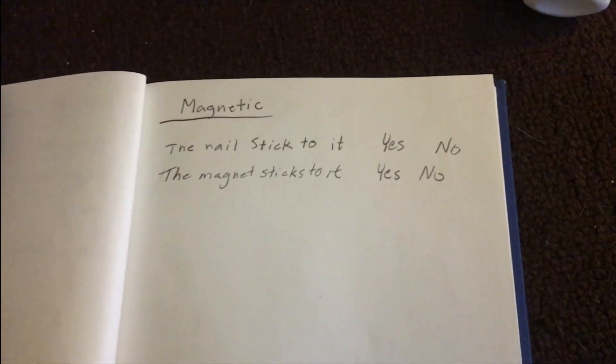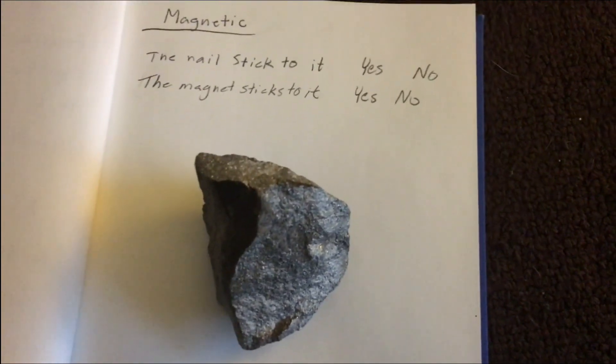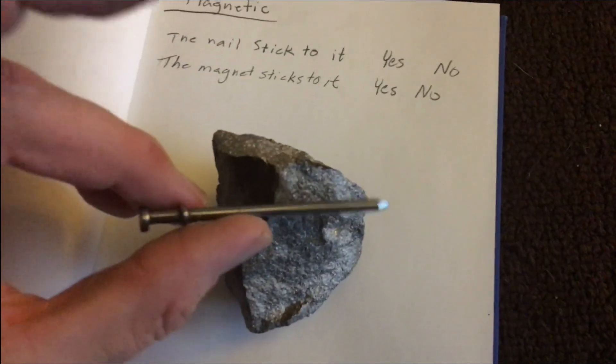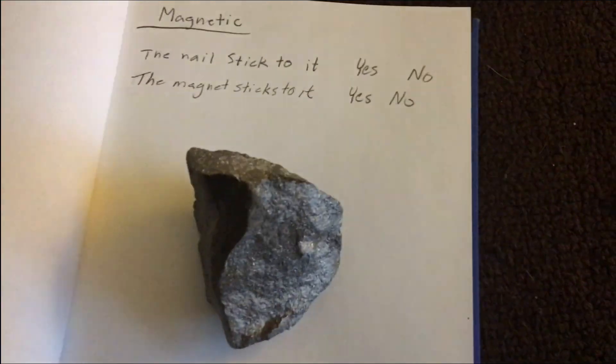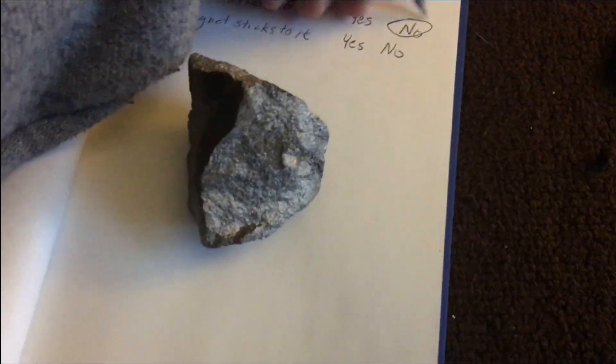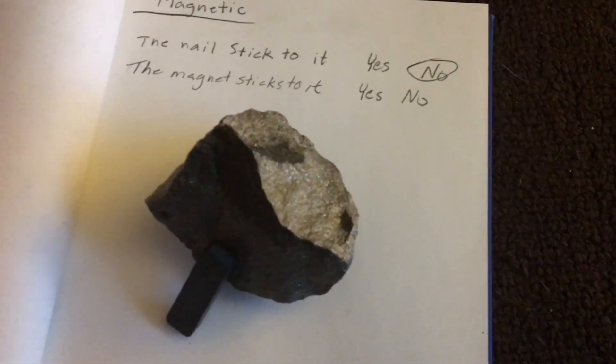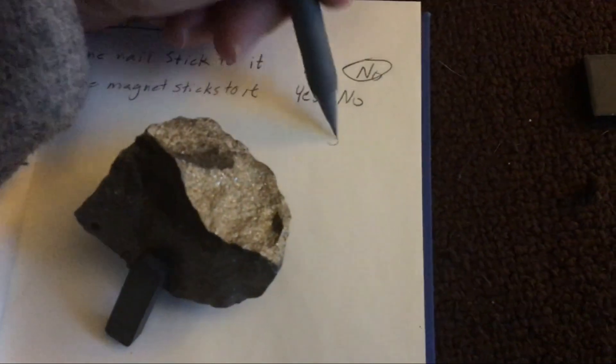Now we're going to do our magnetic test. First I'm going to see if the nail sticks to it, because that would mean the specimen itself is magnetic, and then I'm going to put the magnet to it and see if the magnet sticks. Nail — no. This thing is not magnetic at all. And the magnet — not magnetic at all. I can already tell you from the density that it's not a solid piece of iron — the density is way too low. So: no magnetism.